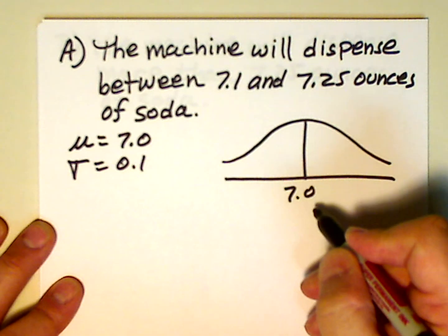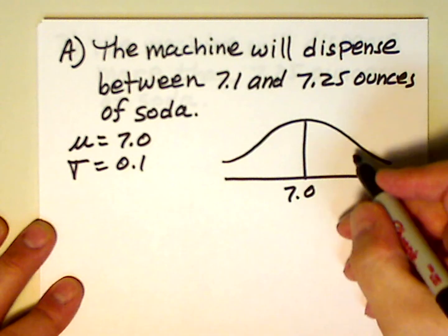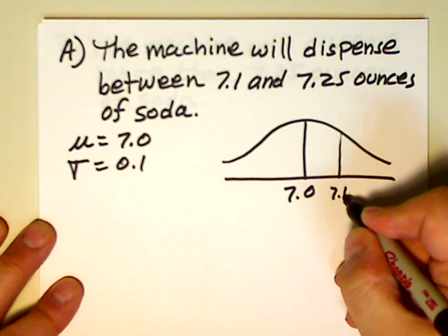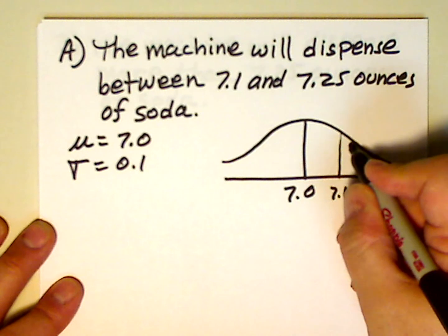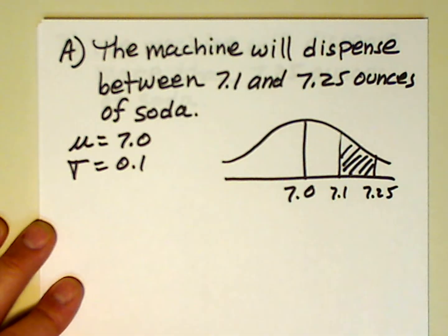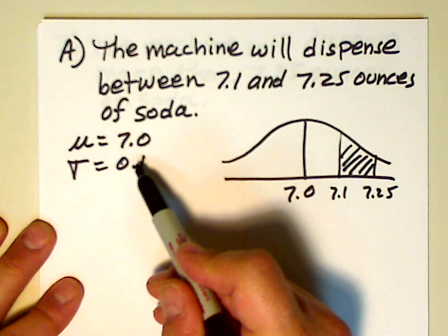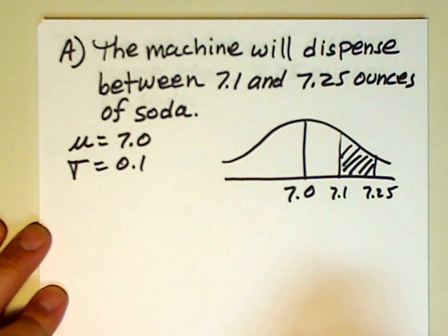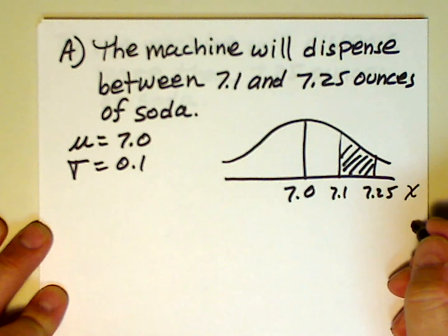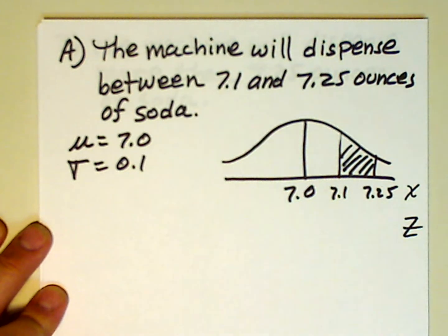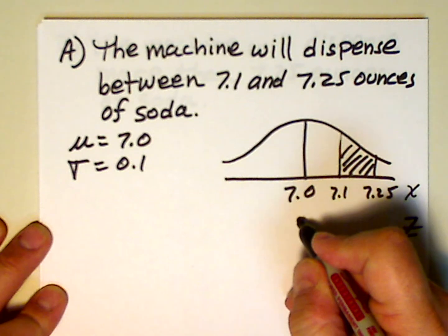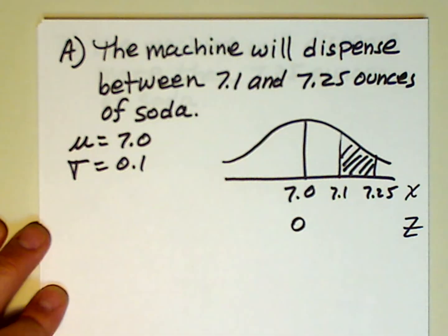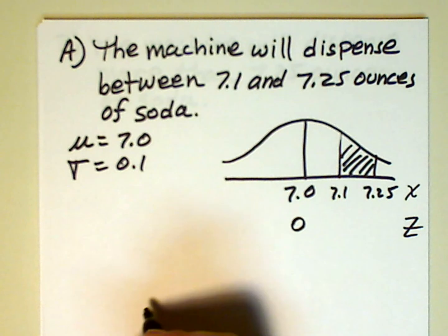7.0 is here at the mean, and we're interested in 7.1 and 7.25 — this particular region that I just shaded. You should always write down what the mean and standard deviation are, and you should always draw a picture and shade the region in which you're interested. These are our x values, and now we need to transform these values into z values for the standard normal distribution, which has a mean of 0 and a variance of 1.